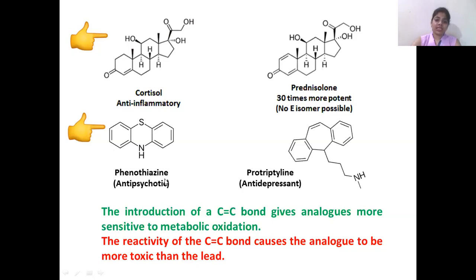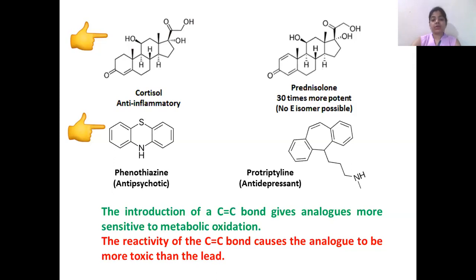The second example is phenothiazine and protriptyline. When certain changes are made to phenothiazine — the S atom is replaced by C=C and the nitrogen atom is extended from the ring system with a propyl chain — phenothiazine is converted to protriptyline and the antipsychotic property is changed to antidepressant. So the change in structure causes changes in activity. When a double bond is introduced in a lead compound, the analogs produced are sometimes sensitive to metabolic oxidation, which is a drawback of introducing the double bond.